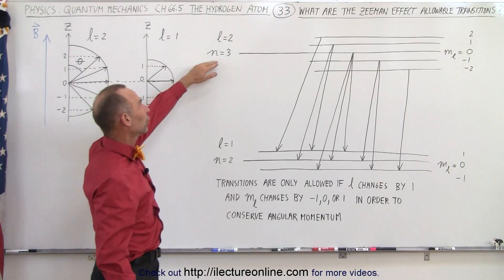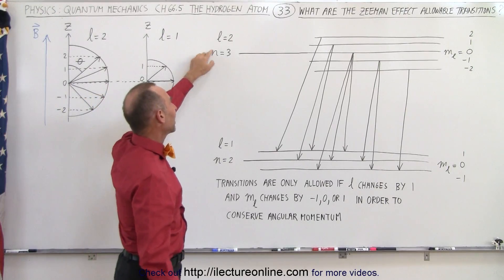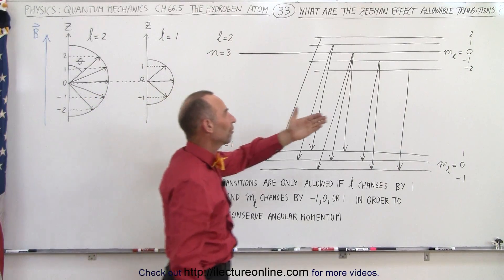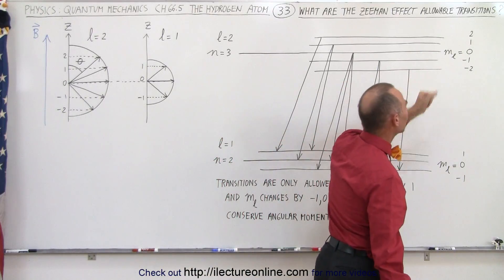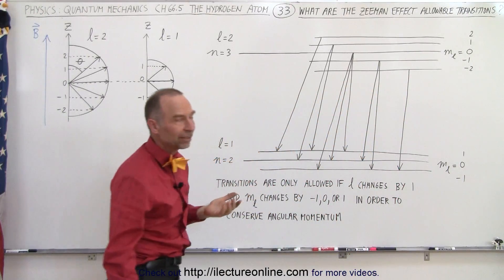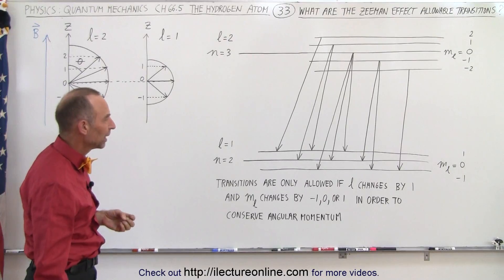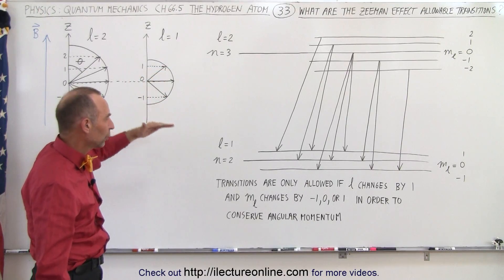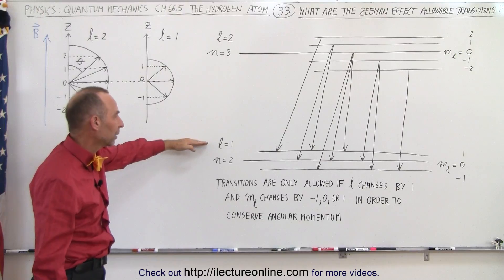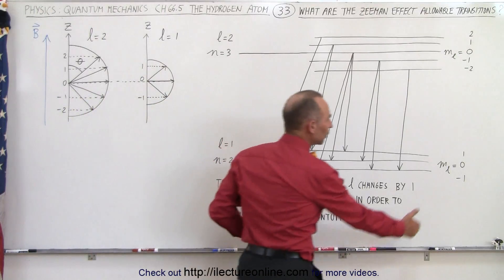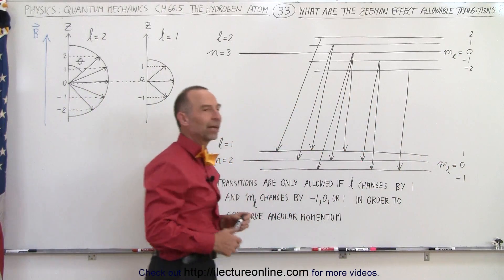Let's say that we're in the third energy level, n equals 3, and let's say that l equals 2, which means there are five different orientations of the angular momentum. m sub l can take on five different values. And let's say the electron goes from that level down to the n equals 2 level, where l equals 1, where there's of course only three allowable values for m sub l.